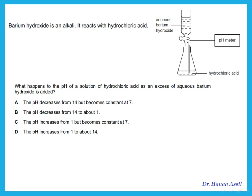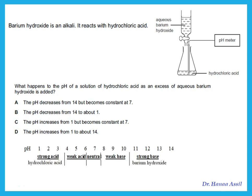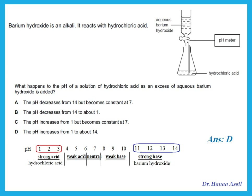Barium hydroxide is an alkali that reacts with hydrochloric acid. What happens to the pH of a hydrochloric acid solution when excess aqueous barium hydroxide is added? We start with hydrochloric acid, which has a pH of 1, 2, or 3 — so we start from around pH 1. When excess barium hydroxide, a strong base, is added, the pH should change from approximately 1 up toward 14.